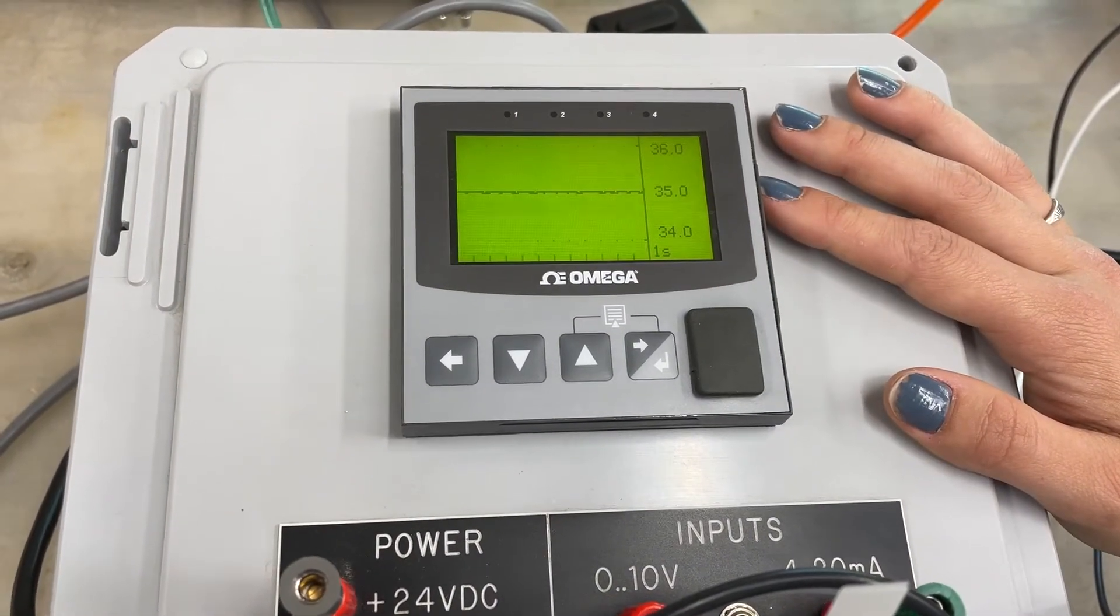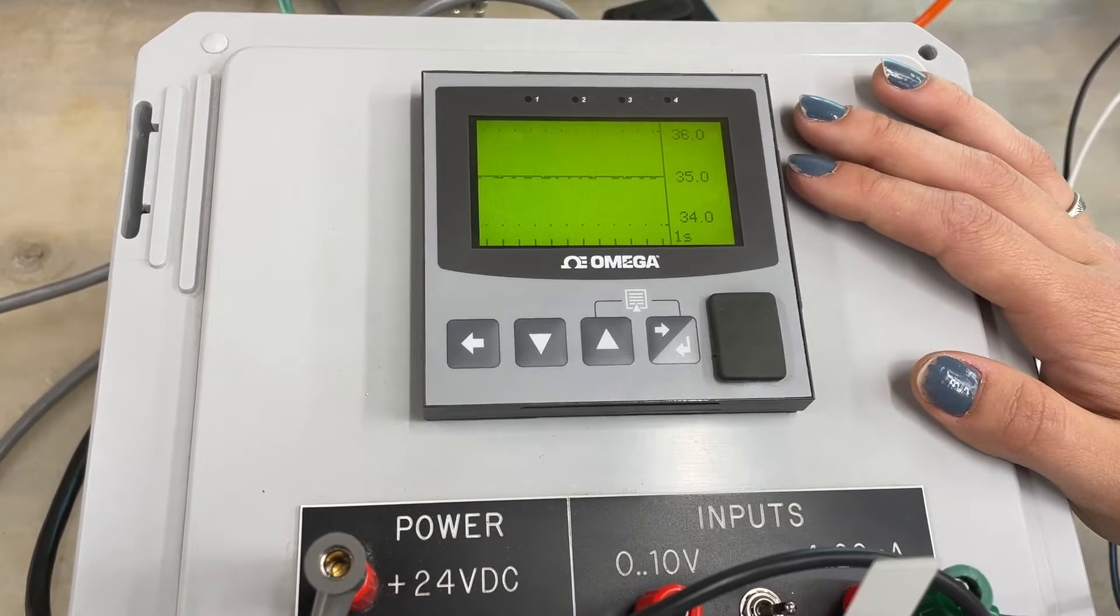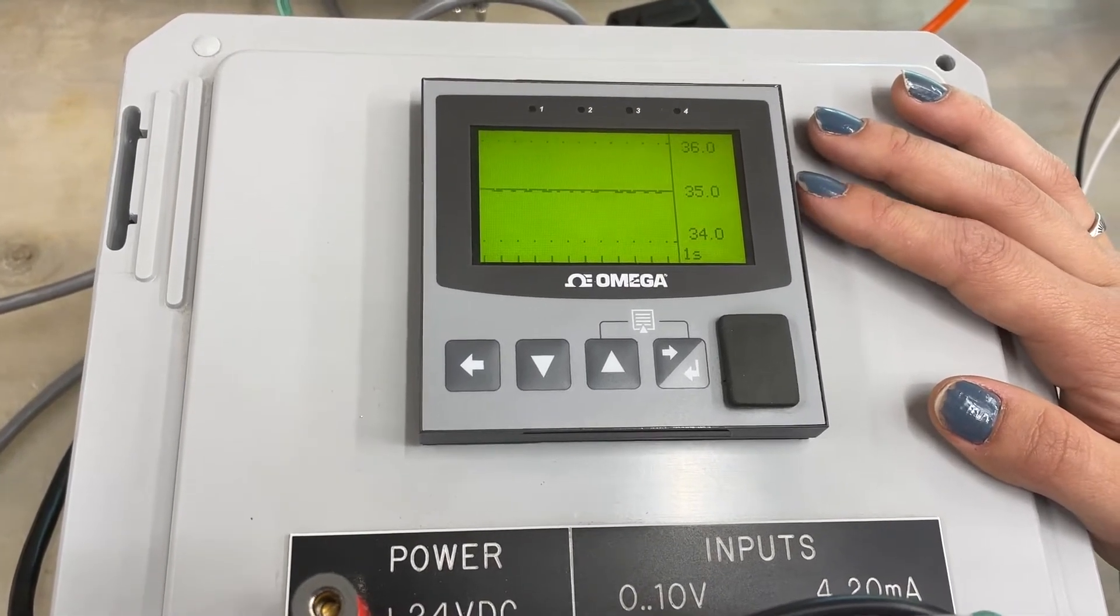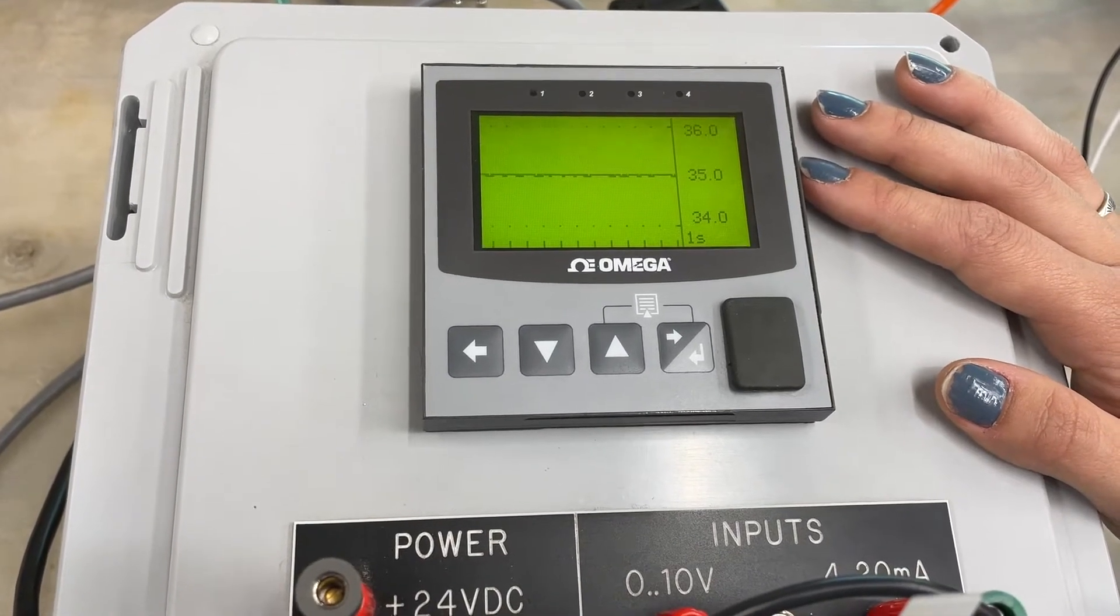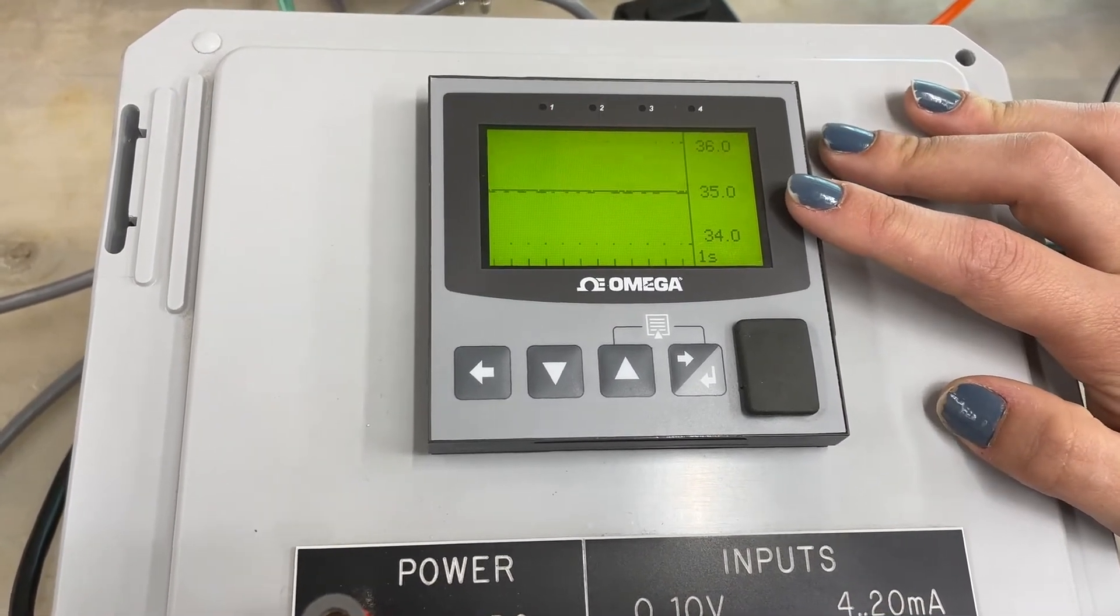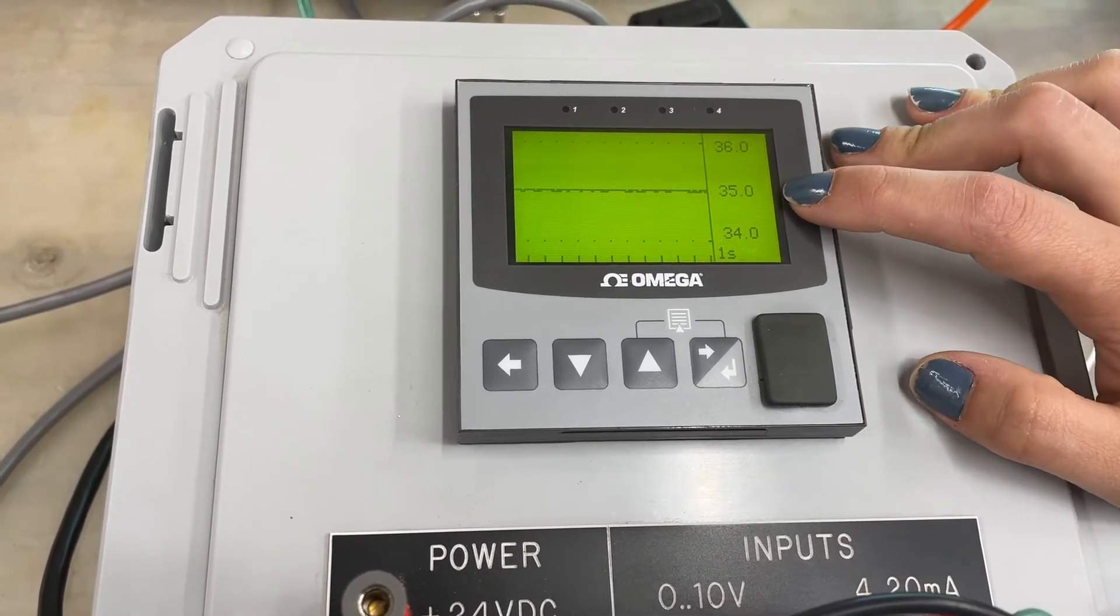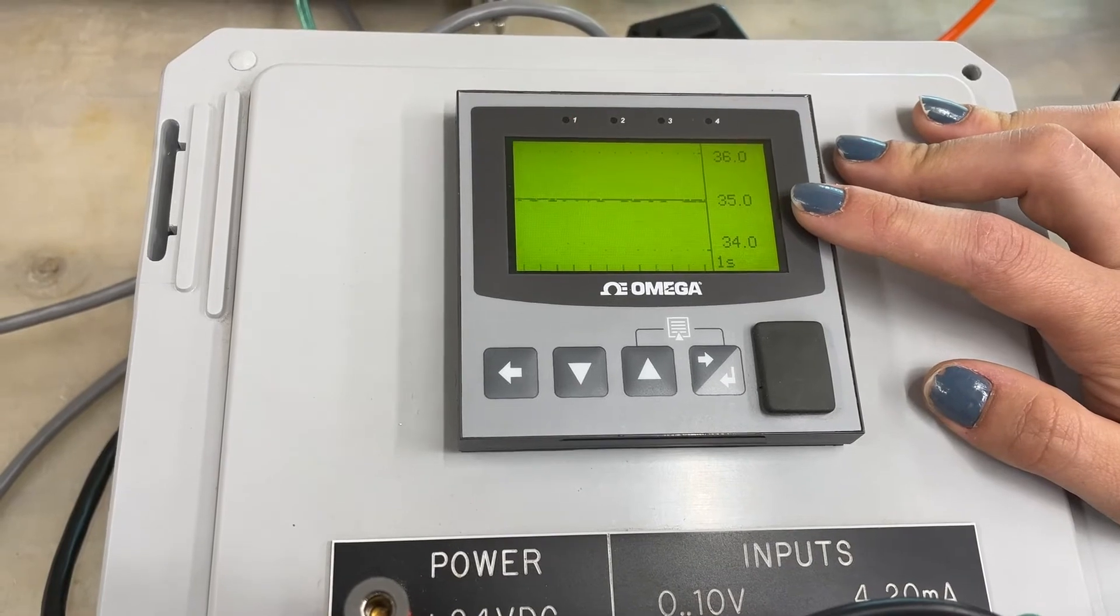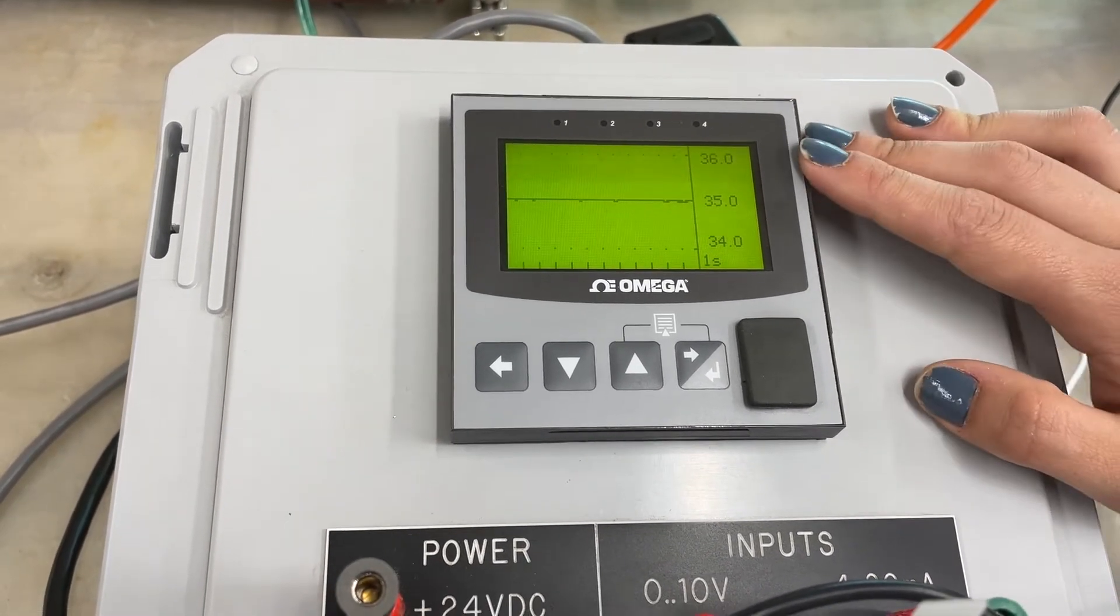Here's the display of the Omega PLC we're using. It is graphing both the flow and the set point. The scale is from 0 to 100% which correlates to 0 to 1000 grams per minute of water through the system. This number in the middle is the measured flow coming directly from the flow meter and you can see right now it's really steady around the set point of 35%. The graph auto-scales so right now it's showing from 34 to 36%.